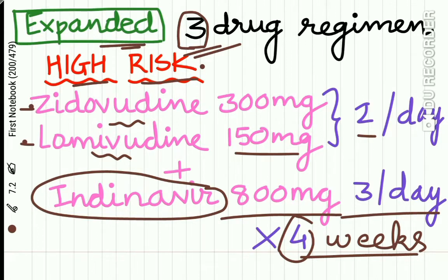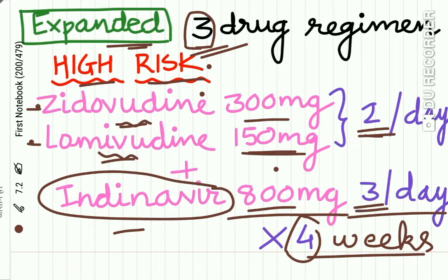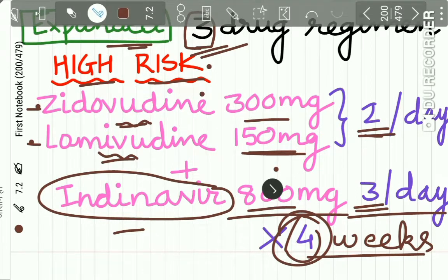The expanded regimen is a three-drug regimen used in high-risk patients. It includes Zidovudine 300 mg, Lamivudine 150 mg, and an additional drug Indinavir 800 mg. Zidovudine and Lamivudine are taken twice per day, while Indinavir is taken three times per day, for a total duration of four weeks.